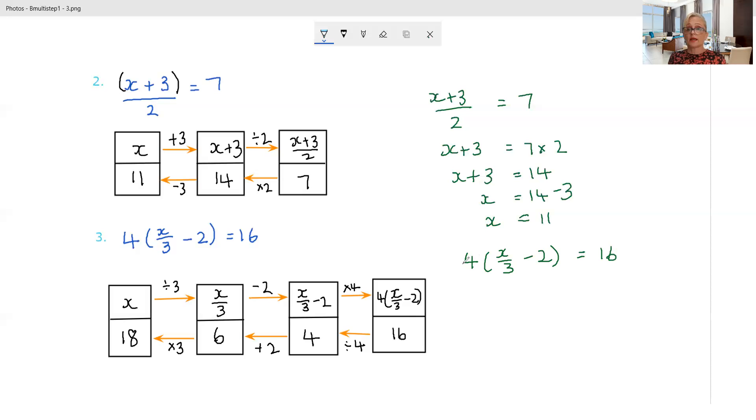So the last thing that was done is the first thing that's got to be undone. So we're going to divide both sides by 4. So we're going to get x on 3 minus 2 is 4. Then the next layer we need to undo is this subtraction of 2, and we're going to add 2 to both sides. So x on 3 is 6. And then we're just going to get rid of this division of 3 by multiplying by 3. And we're going to get x is 18.